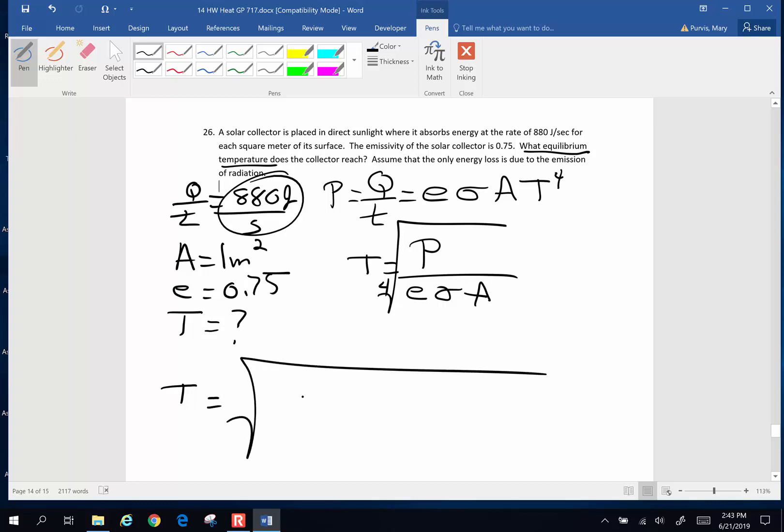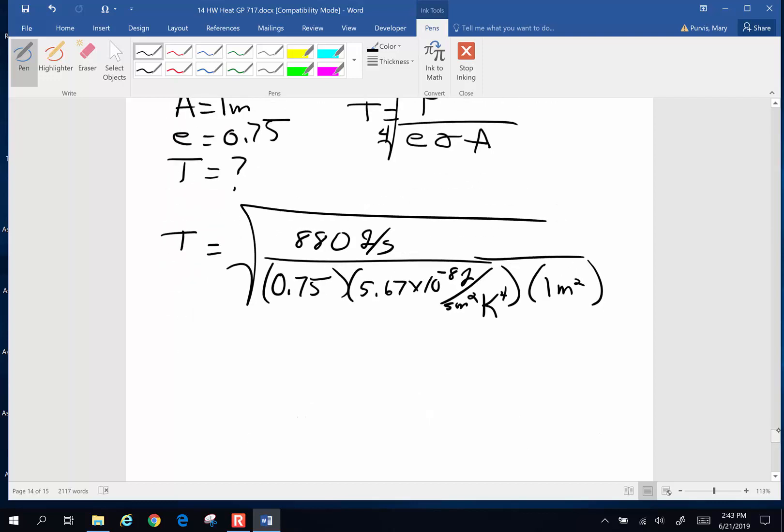So the power rating is 880 joules per second. Emissivity is 0.75. Stefan Boltzmann constant 5.67 times 10 to the negative 8 joules per second meters squared Kelvin to the fourth power. And this is per one square meter of surface area. Now let's see what we get.